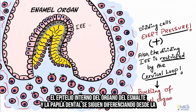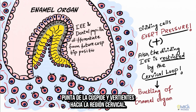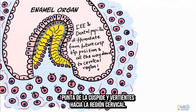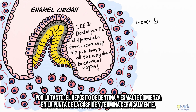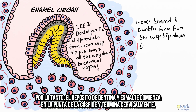The inner enamel epithelium and the dental papilla continue to differentiate from the cusp tip down the slopes of the cusp to the cervical region. Hence, the deposition of dentine and enamel begins at the cusp tip and ends cervically.